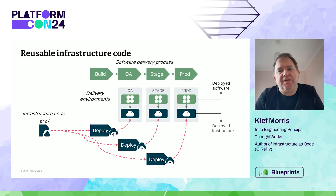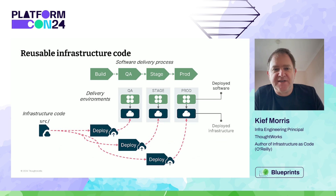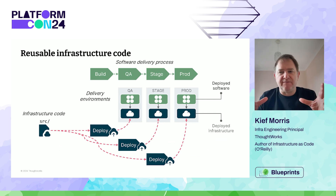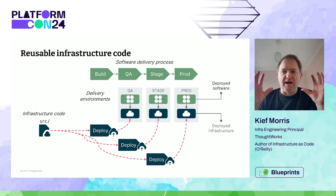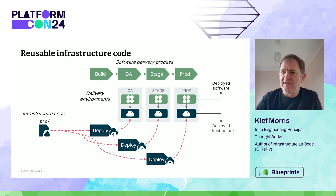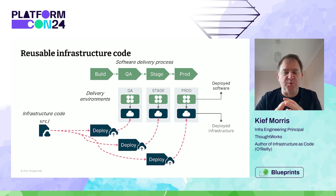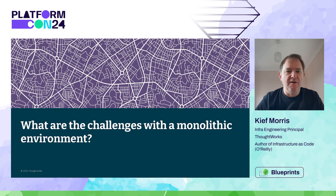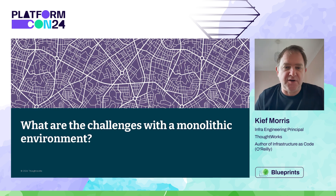The solution to that is reusable infrastructure code — a single copy of the infrastructure code that we apply to each environment, parameterized to manage the differences between environments. We can also componentize it to make it more manageable, putting together different environments for different situations without having copies of code.